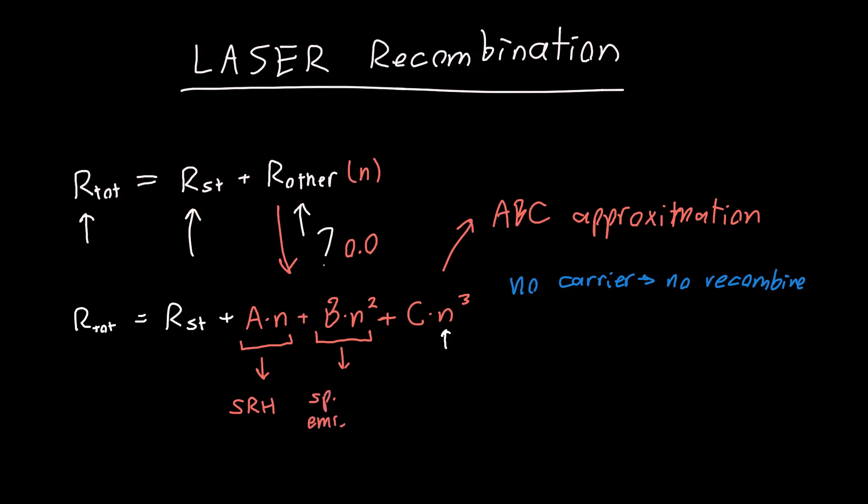So this is the emission that happens in LEDs, this is just the random, essentially random transition from electrons in the conduction band to the valence band if given enough time. And this term is what's known as Auger recombination and this is a multi-particle recombination process that basically involves one of these electrons getting kicked up to a higher energy and at the same time causing an electron to move down in energy.